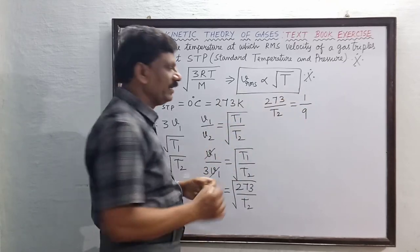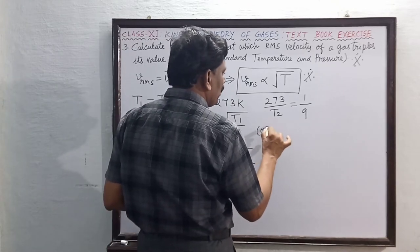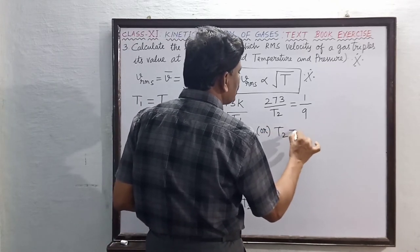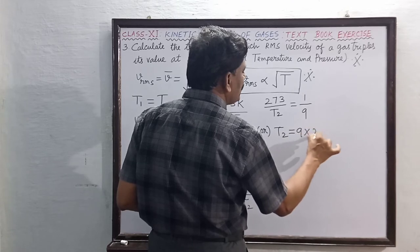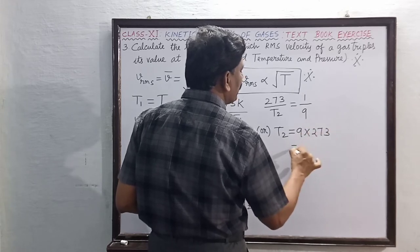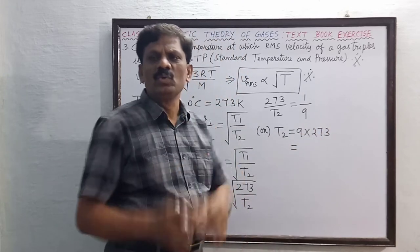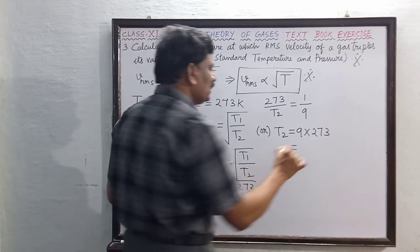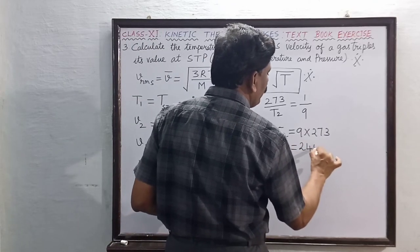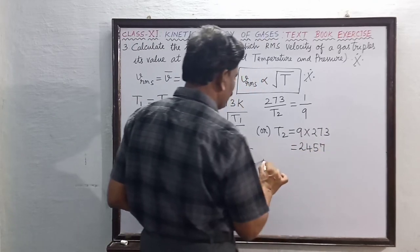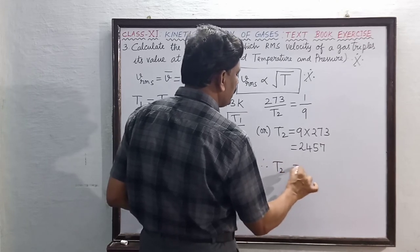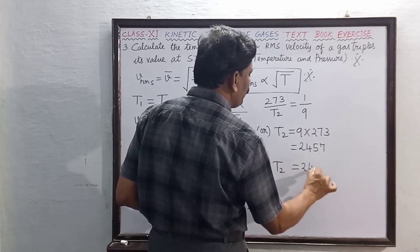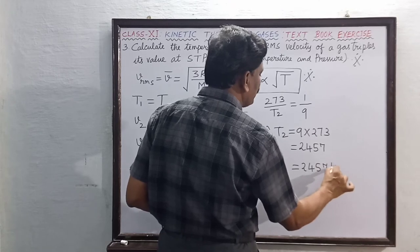T2 is equal to 9 times 273. Now 9 into 273 equals 2457. Therefore T2 is equal to 2457 Kelvin.